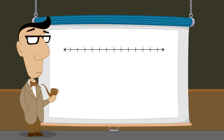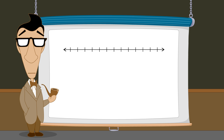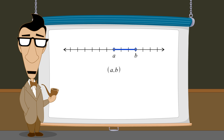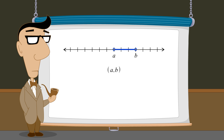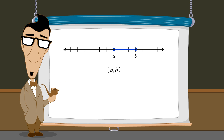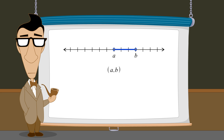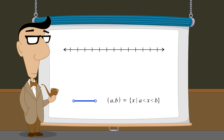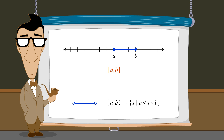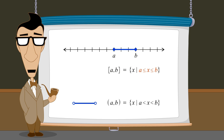So far we have seen how to write four different types of intervals. Let's use A and B to represent the left and right endpoints. If both endpoints are excluded, then the interval is open. Since the endpoints A and B are excluded, the set consists of all numbers greater than A and less than B. If both endpoints are included, then the interval is closed. Since the endpoints A and B are included, the set consists of all numbers greater than or equal to A and less than or equal to B.